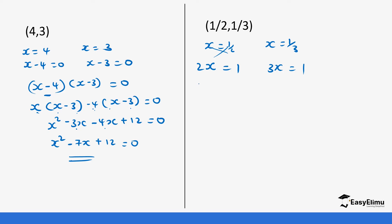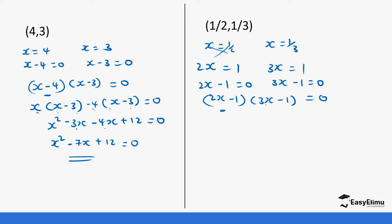So this is the same as 2x minus 1 equals 0 and 3x minus 1 equals 0. So it's (2x minus 1) times (3x minus 1) equals 0. We use this expression to expand: 2x into bracket (3x minus 1), then minus 1 into bracket (3x minus 1), equals 0.